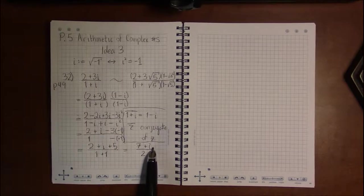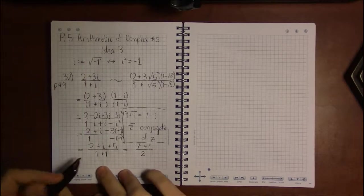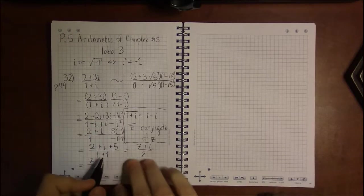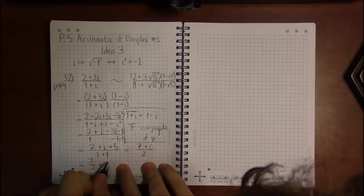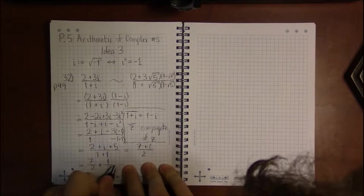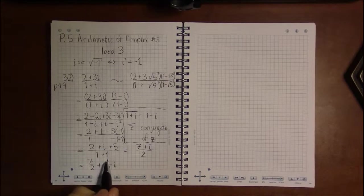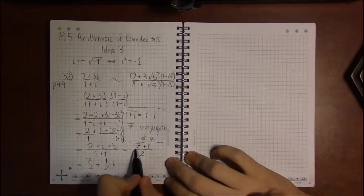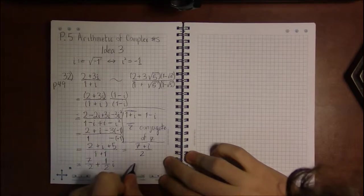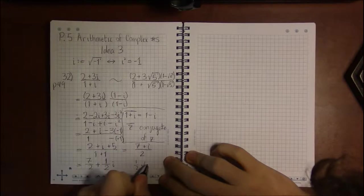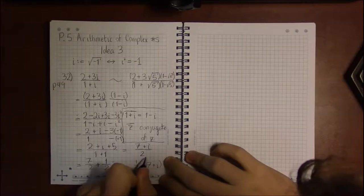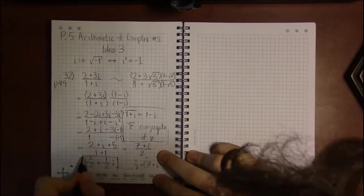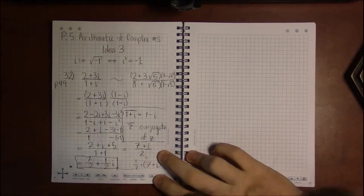I can, if you will, distribute the 2, or dividing by 2, to both 7 and to the i. And I can write it as i over 2 is just 1 half i. The other way you can think about this is that dividing by 2 is the same thing as multiplying by a half. And then distributing that to get here. And this is how you divide 2 complex numbers.